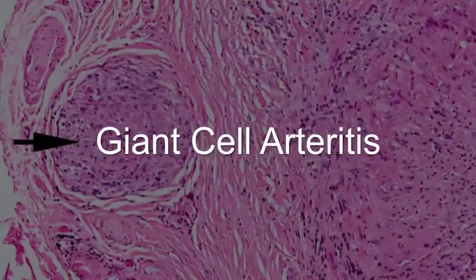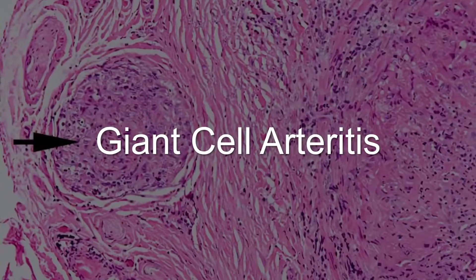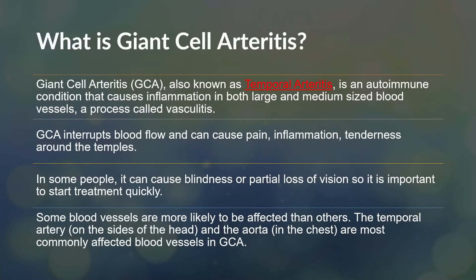Today we're going to talk about giant cell arteritis. Giant cell arteritis is also known as temporal arteritis. It is a form of vasculitis — vasculitis means inflammation of blood vessels. It's an autoimmune disease that causes this. For giant cell arteritis in particular, it's inflammation of larger and medium-sized blood vessels. It's probably the most common cause of vasculitis for larger blood vessels and one of the more common causes of vasculitis overall.